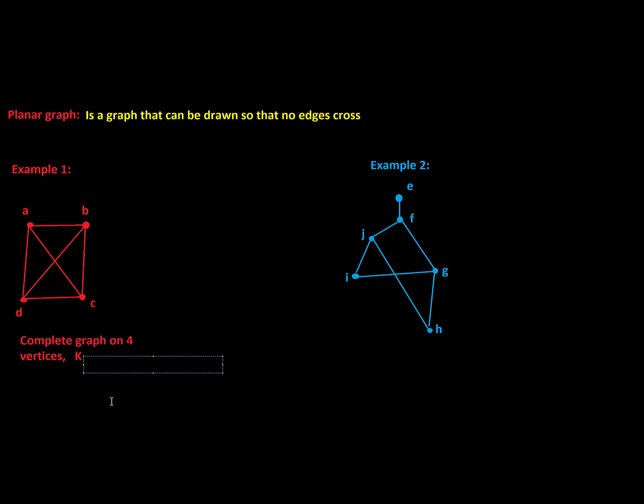So a reminder that a complete graph is one where each vertex is connected to everybody else. So A is connected to B, C, and D, and similarly vertex B is connected to A and D and C. So that's what we mean by a complete graph.